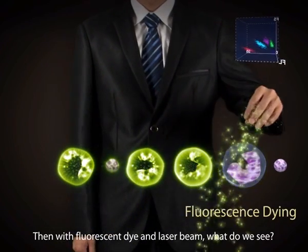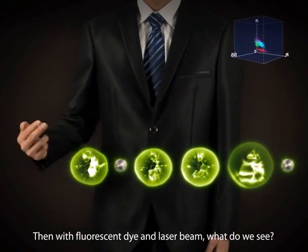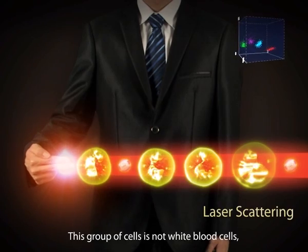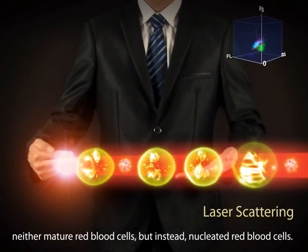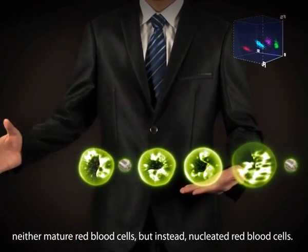Then, with fluorescent dye and the laser beam, what do we see? This group of cells is not white blood cells, neither mature red blood cells, but instead, nucleated red blood cells.